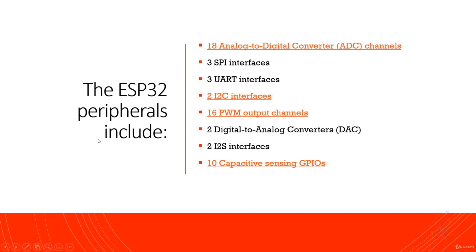The ESP32 peripherals include 18 analog-to-digital converter, or ADC channels, where you can receive analog signals, and these signals can be converted to digital internally.